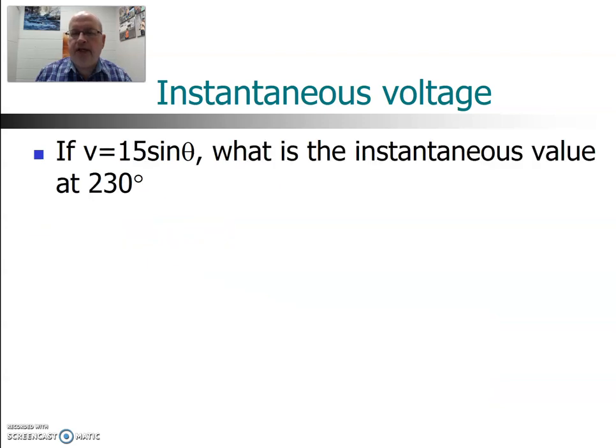So, here's an example of that. If we want to know what is the instantaneous value at 230 degrees, and it has a peak value of 15, basically just fill in the 230 in terms of theta, and take the sine, multiply by 15, you will get negative 11.5 volts, because you're actually in a negative half cycle. You're past 180 degrees.